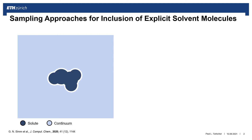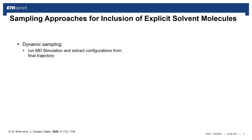We studied the questions of how many of these molecules are needed and how to sample different configurations with the identical number of solvents. For a dynamic approach, we extracted configurations with different numbers of solvent molecules from an MD trajectory. For a static approach, we weighted and built random minimum structures, short WRMS.